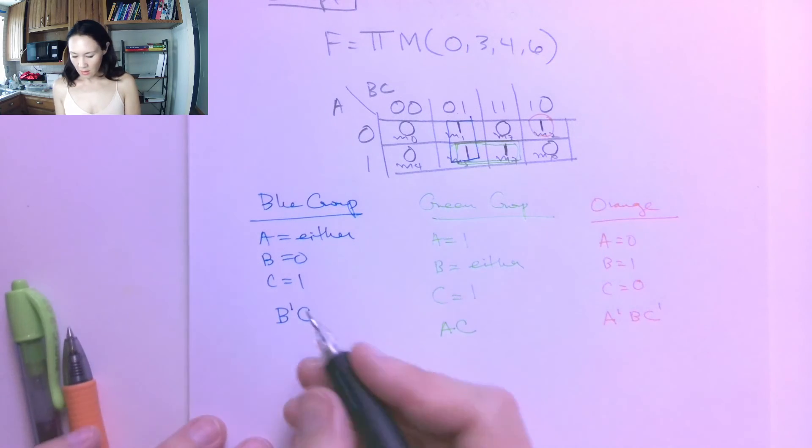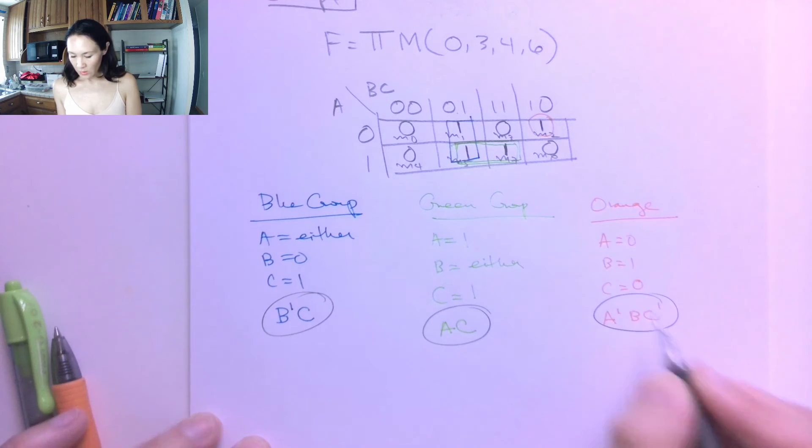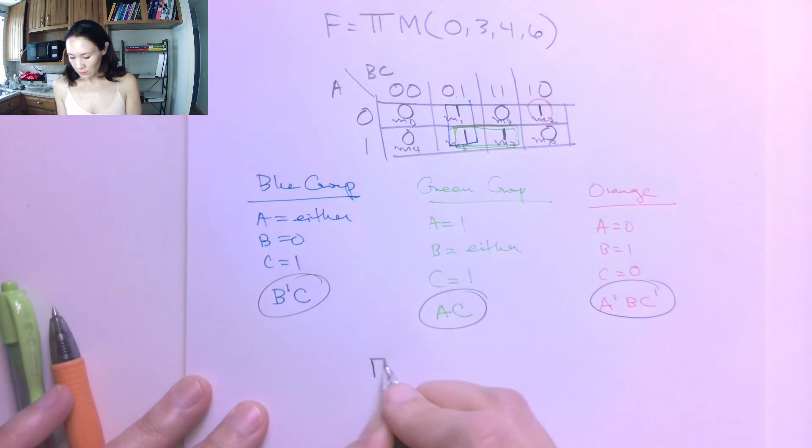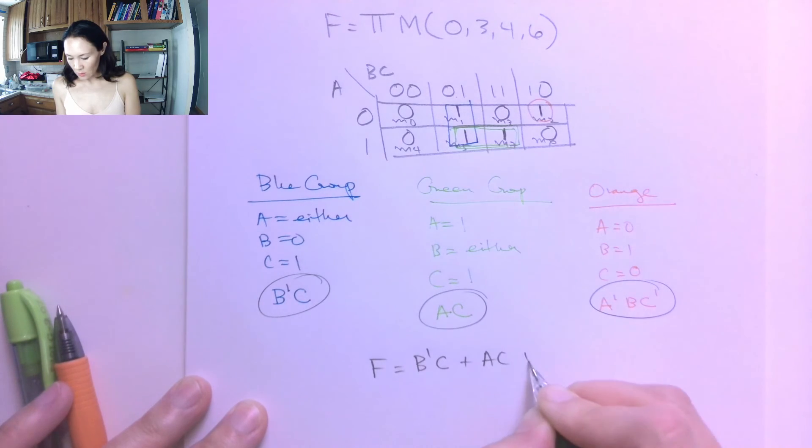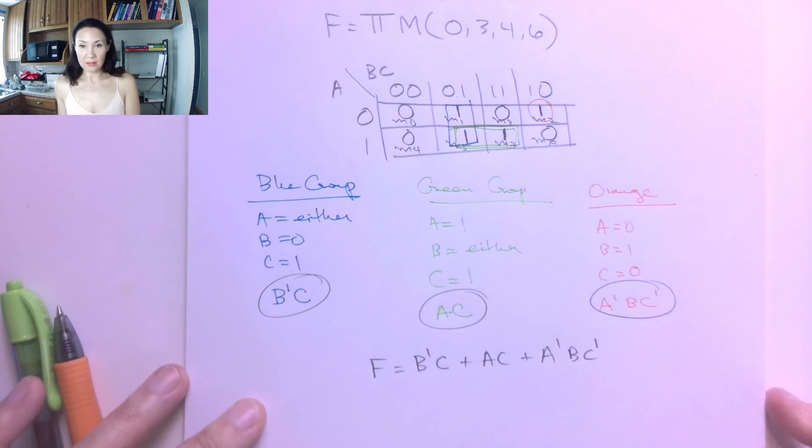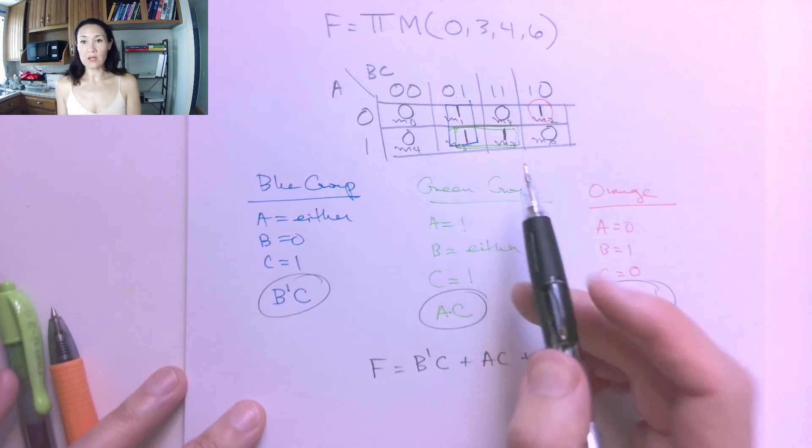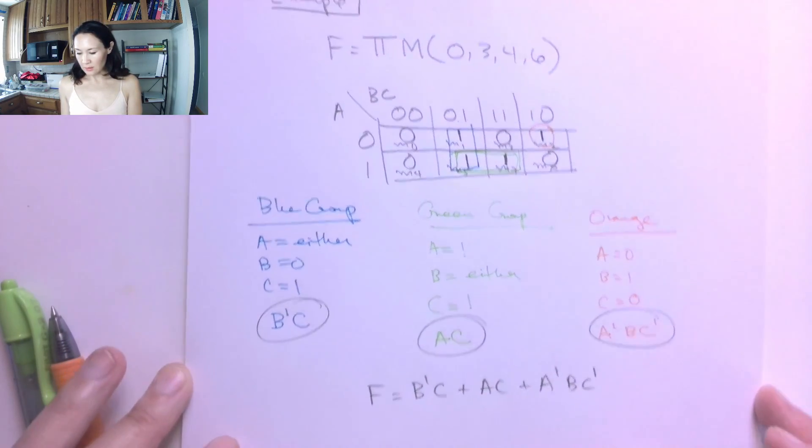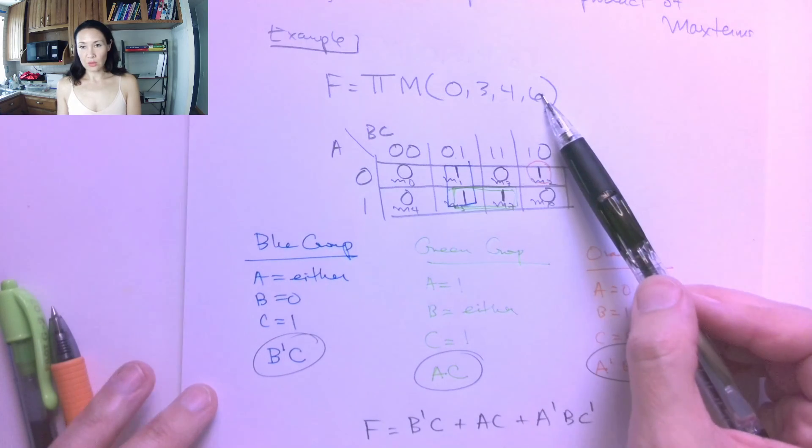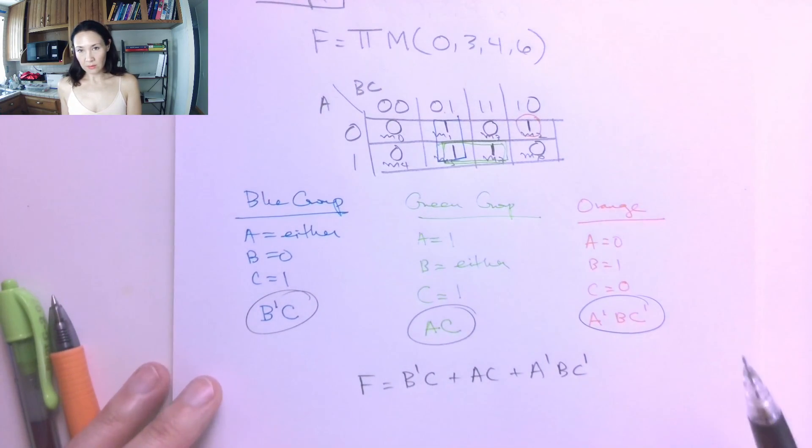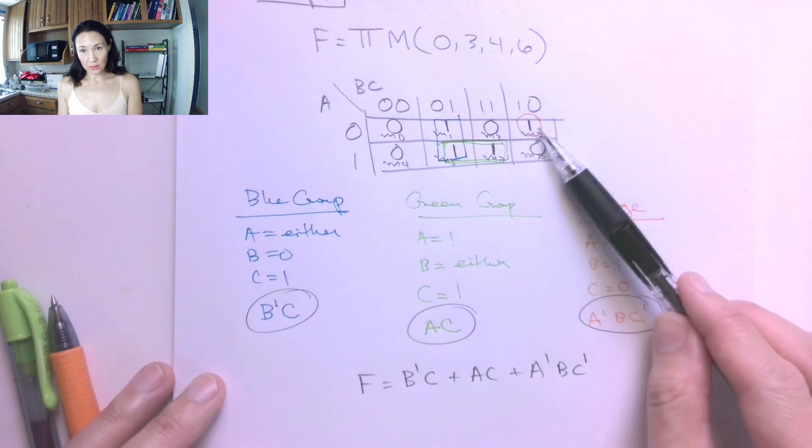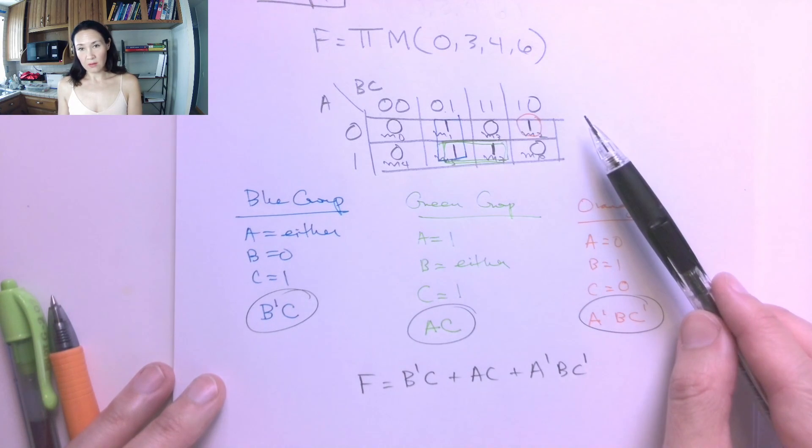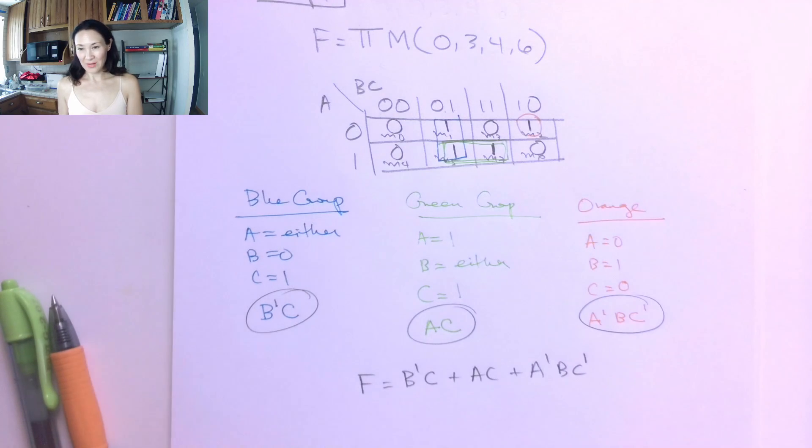So then we just take all of these, and we OR them together. So our reduced function F is going to be B-not-C, or A-C, or A-not-B-C-not. And this is the fully reduced form for F. We used a Karnaugh map to do our reduction instead of Boolean algebra, and this is from the max-term representation. So let me know if you have questions about that, and also how to handle any single ones that don't have a group with another one.